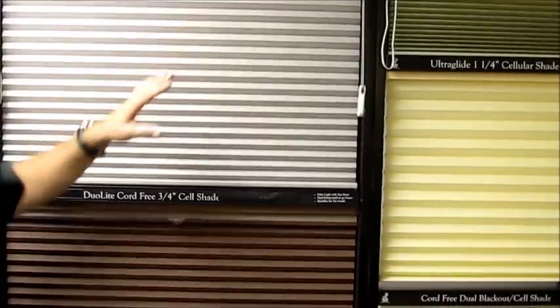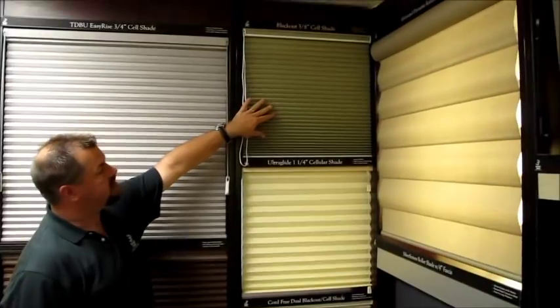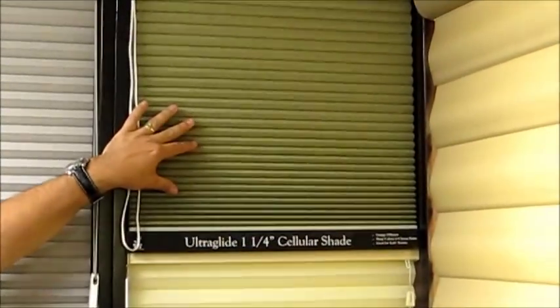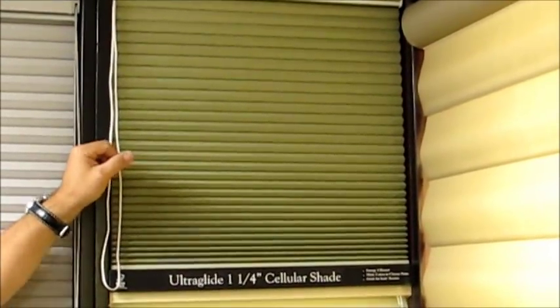Some of the options that you can see up here, I'm going to show you, is that the first option is pleat size. Here, you've got a smaller pleat. This is great for French doors, great for small windows, and for ones that have minimum sill depth.